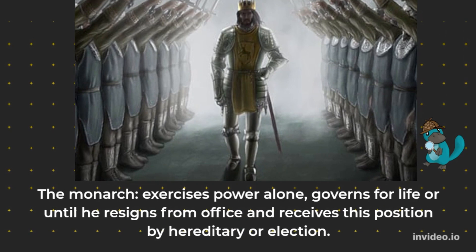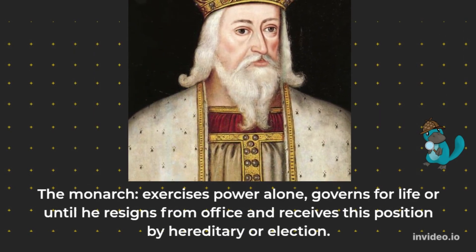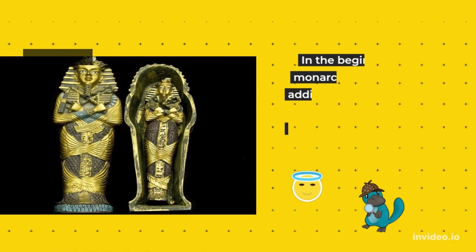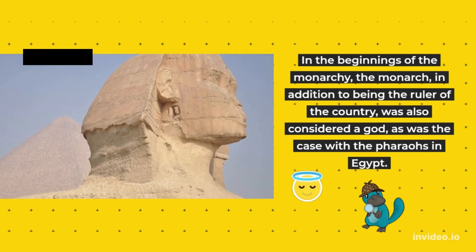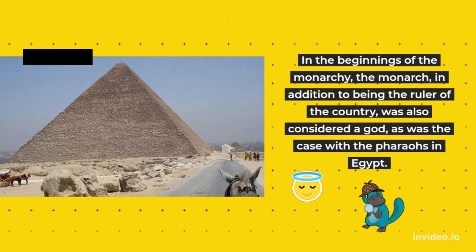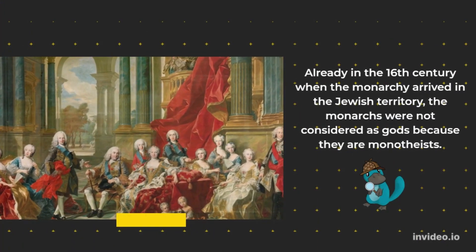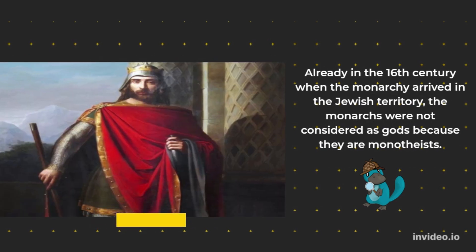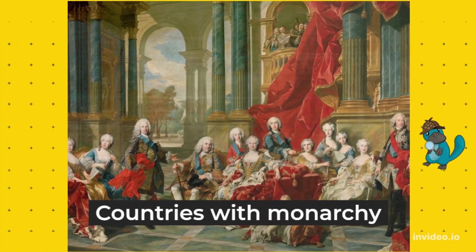Characteristics of a monarchy: the monarch exercises power alone, governs for life or until he resigns from office, and receives the position by hereditary succession or election. In the beginnings of the monarchy, the monarch, in addition to being the ruler of the country, was also considered a god, as was the case with the pharaohs in Egypt. Already in the 16th century, when the monarchy arrived in Jewish territory, the monarchs were not considered gods, because they are monotheists.